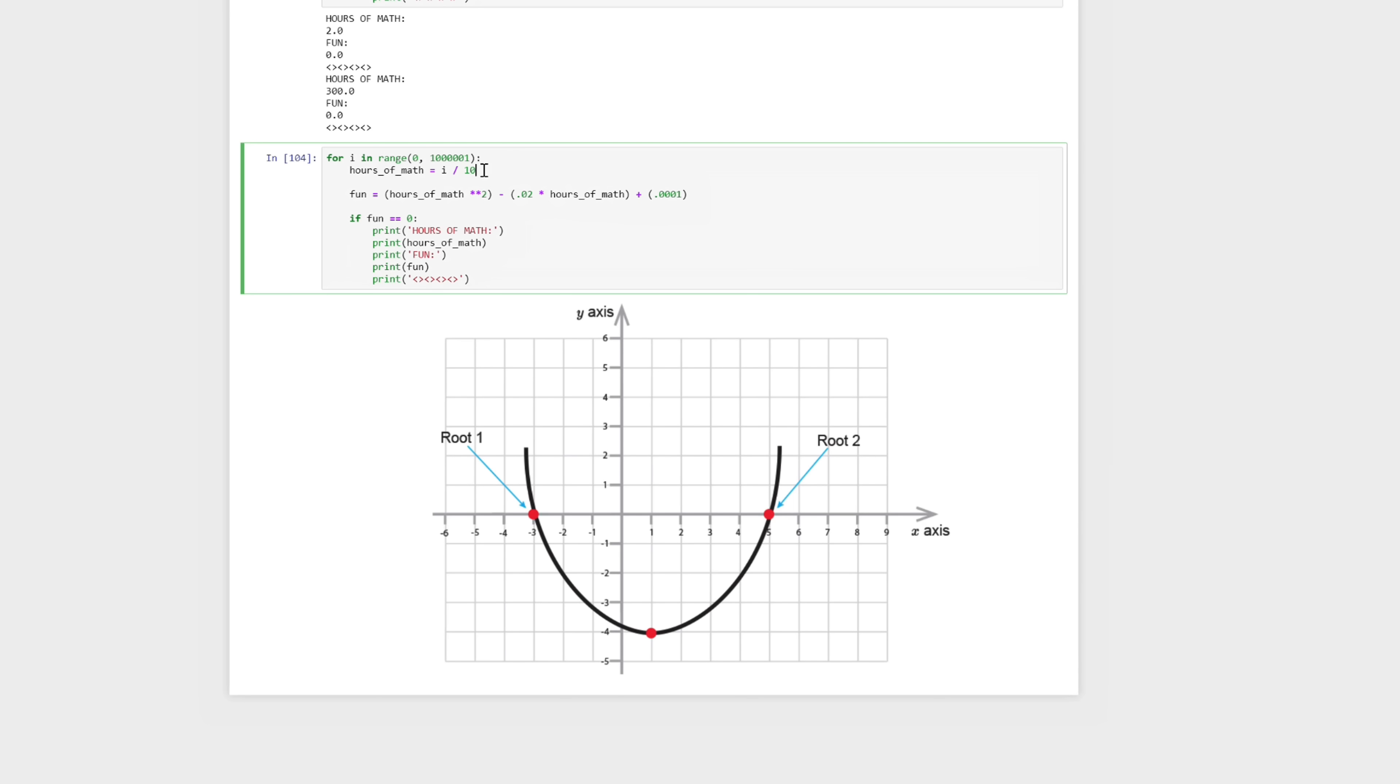We're going in intervals of 0.1. So we're going 0, 0.1, 0.2, 0.3, 0.4, and so on, all the way up to 100,000. But what if the number was actually 0.25? We would never find the solution to this problem this way. So our function would never equal 0. We'd skip over it and we would never find it. And that's why it's not returning anything here.